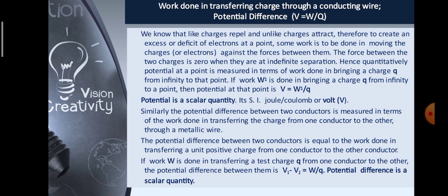Let's see what is potential difference. We know that like charges repel and unlike charges attract. Therefore, to create an excess or deficit of electrons at a point, some work is to be done in moving the charges against the forces between them. The force between two charges is zero when they are at infinite separation. Hence, quantitatively, potential at a point is measured in terms of work done in bringing a charge q from infinity to that point. If work W1 is done in bringing a charge q from infinity to a point, then the potential at that point is V = W1 / q. Potential is a scalar quantity. Its SI unit is joule per coulomb, or volt. Similarly, the potential difference between two conductors is measured in terms of the work done in transferring the charge from one conductor to the other through a metallic wire.